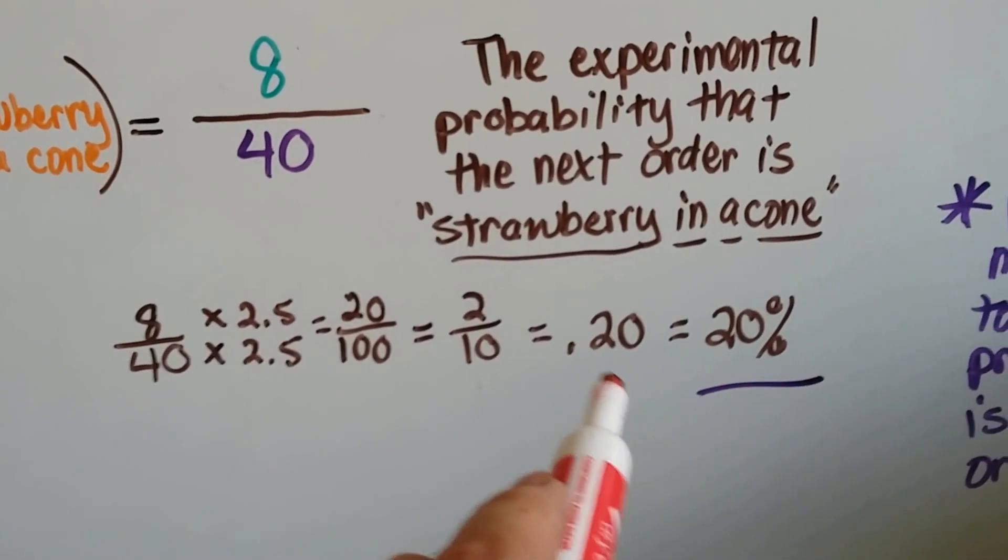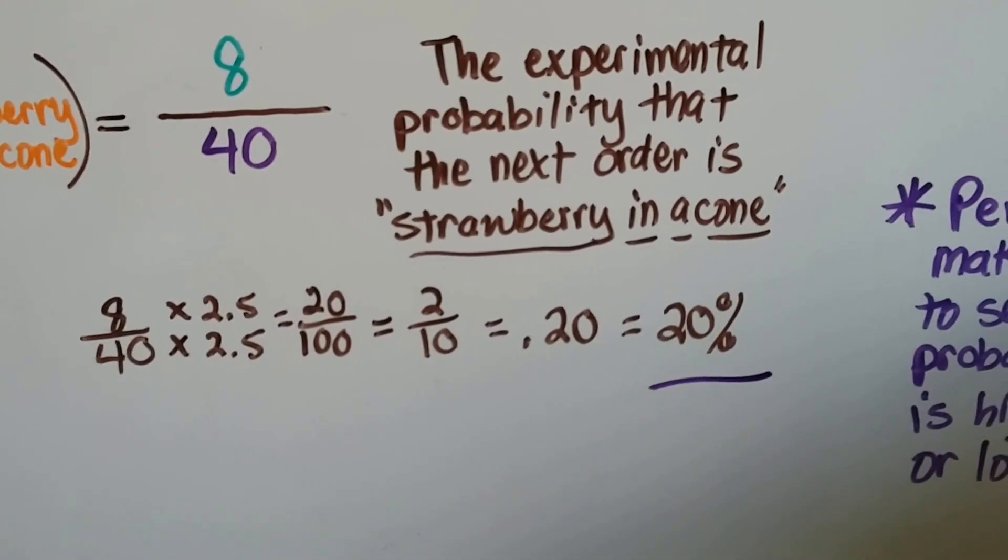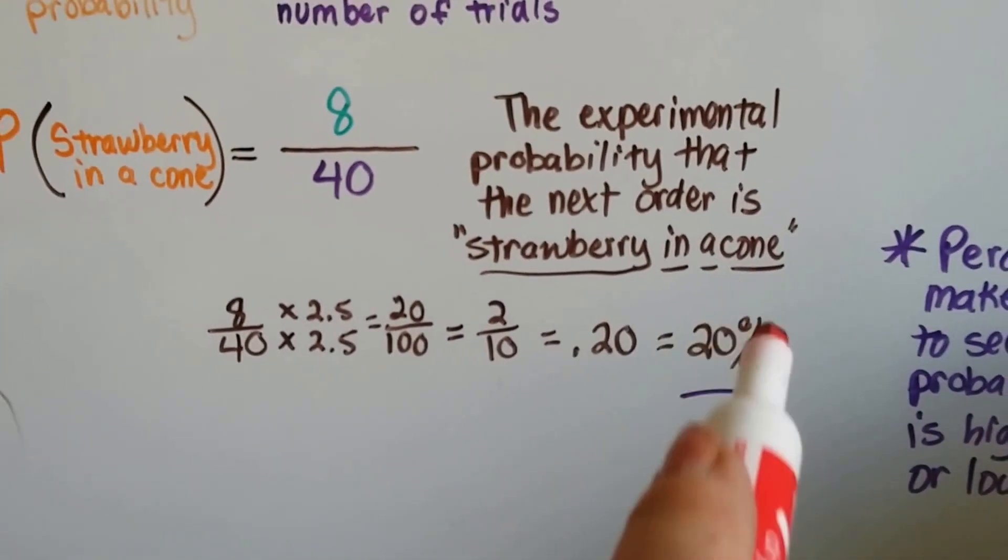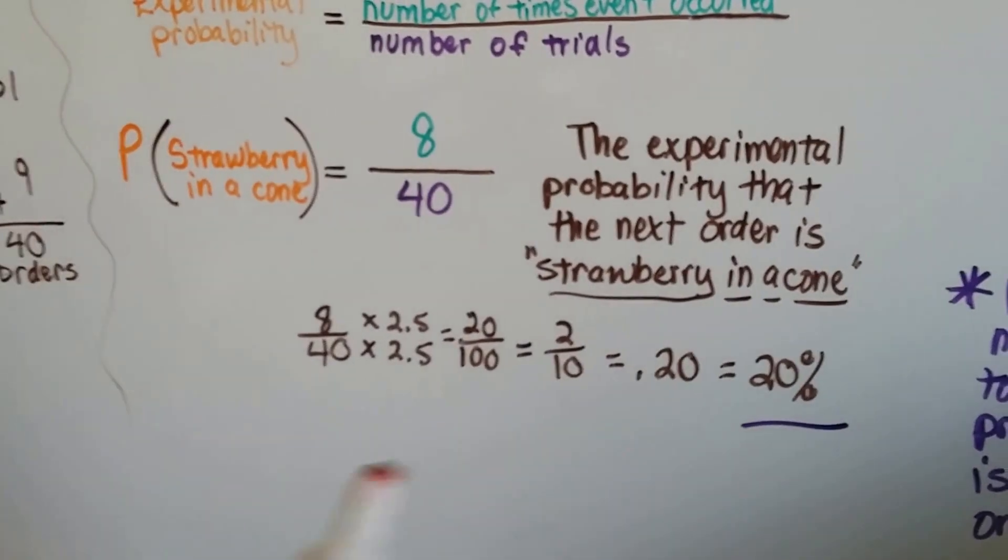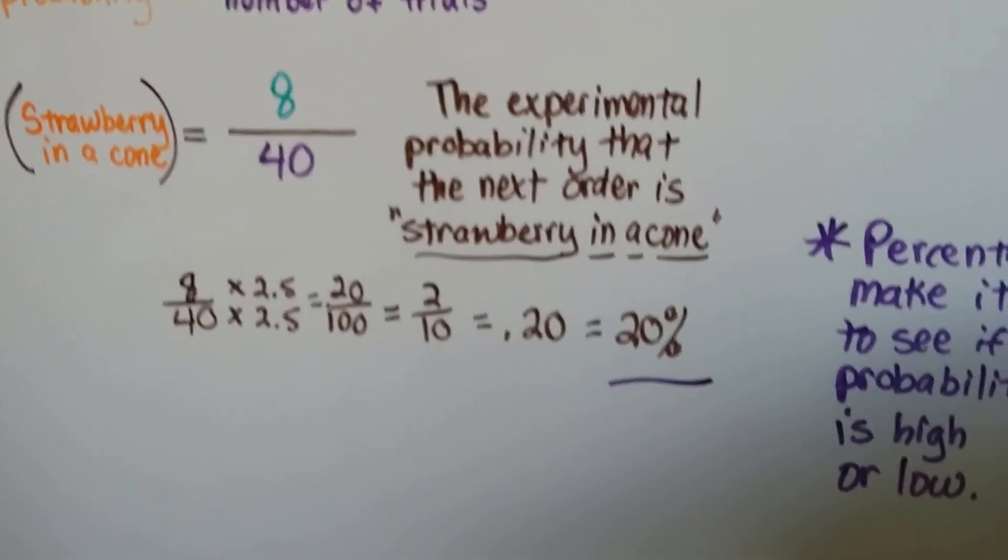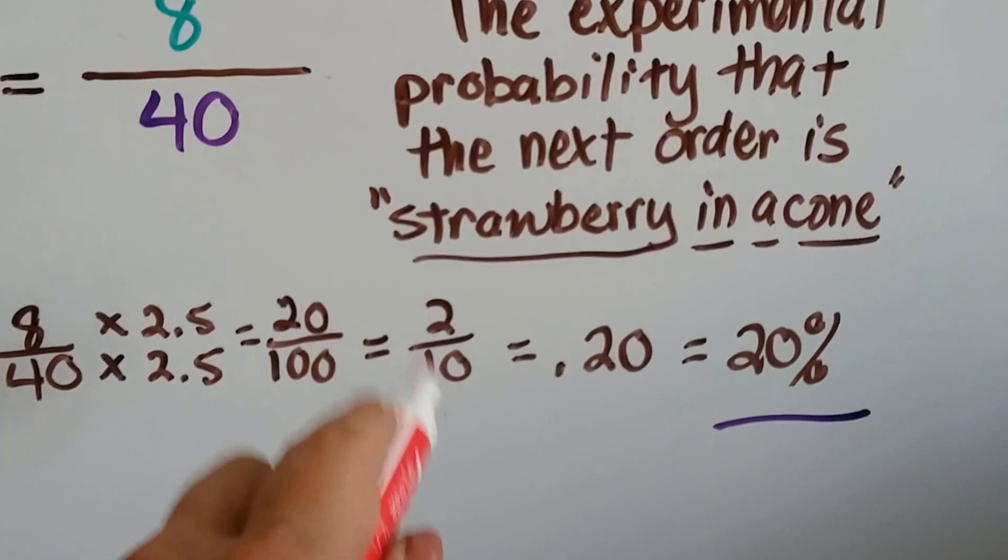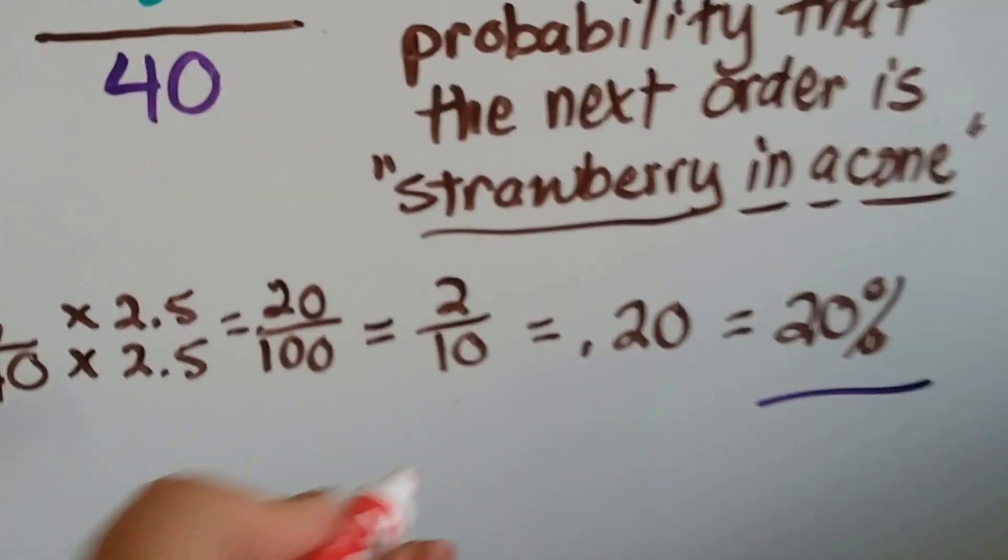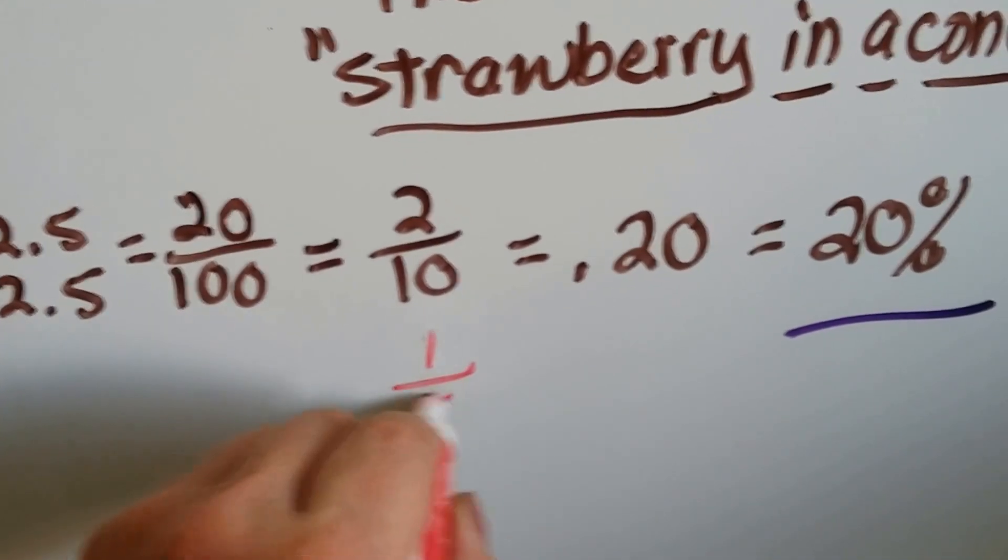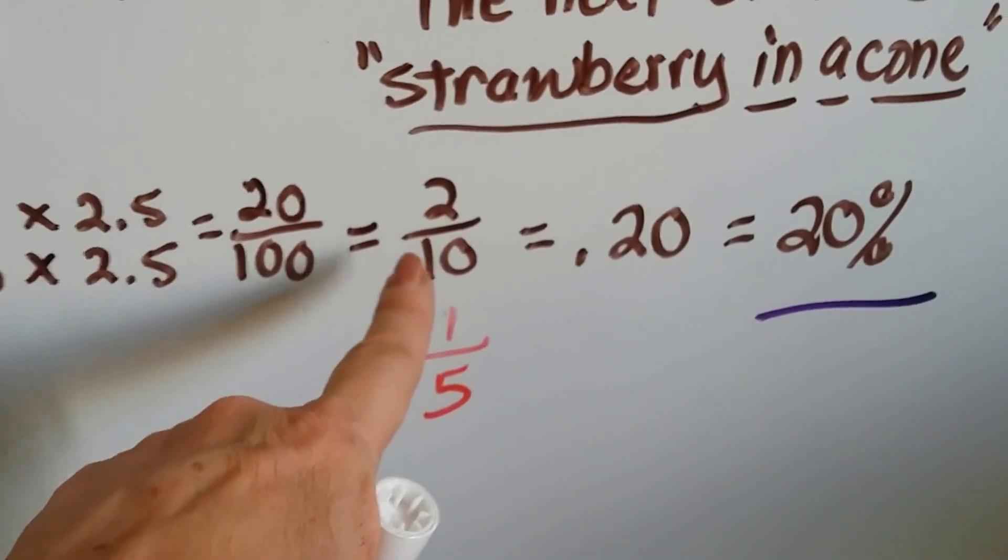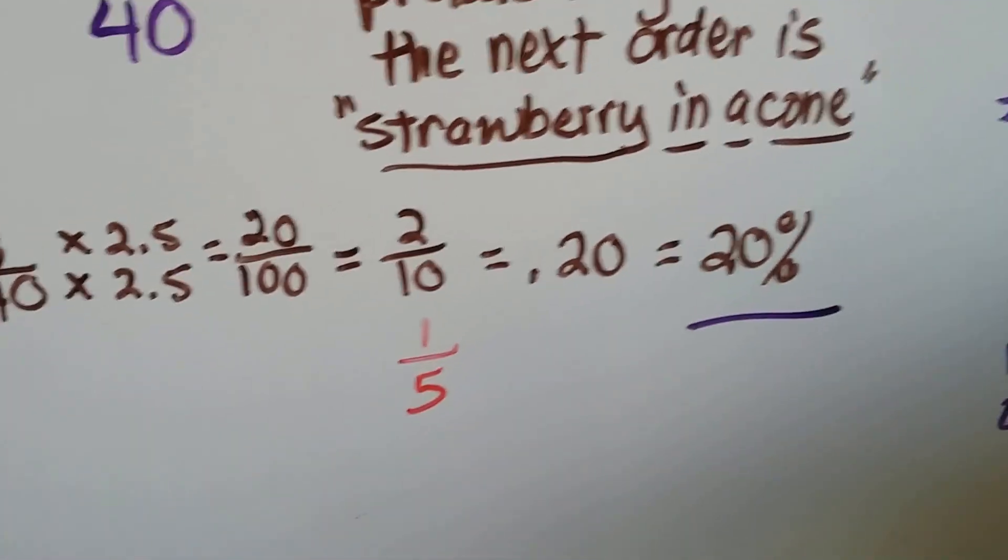So, there's a 20% chance that the next order is going to be strawberry in a cone, or 1/5. Because this could even be 1/5, that could be reduced a little more. I almost missed that.